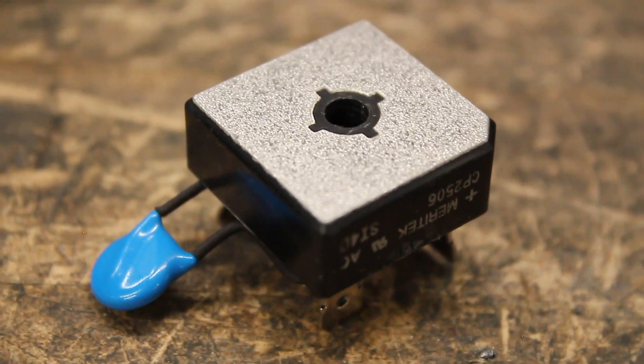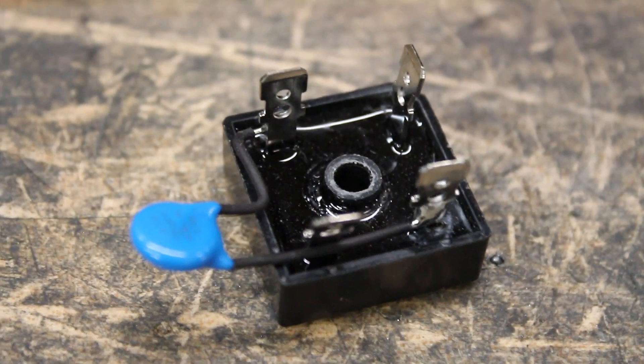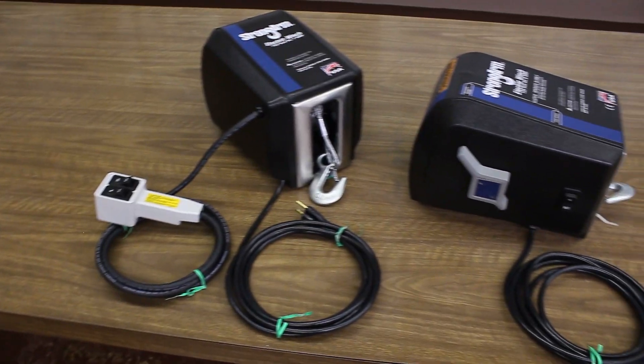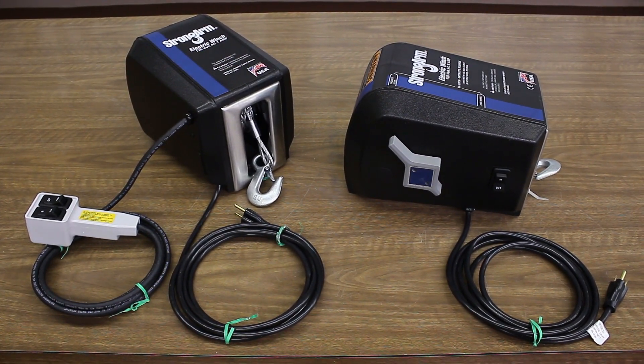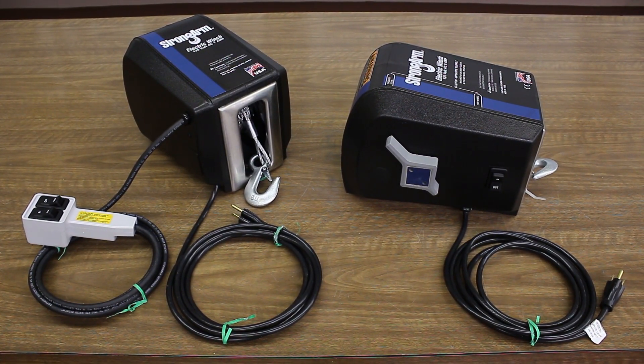This video gives step-by-step instructions on how to replace the bridge assembly on all AC models of Strong Arm electric winches made by the Dutton Lainson Company.